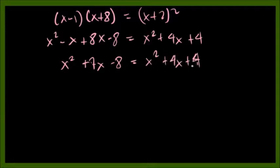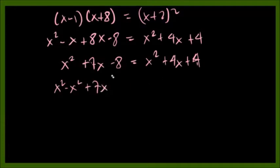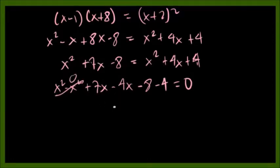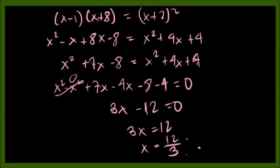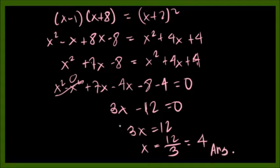We transpose all terms to one side: x squared minus x squared plus 7x minus 4x minus 8 minus 4 equals 0, giving us 3x minus 12 equals 0. So 3x equals 12, and solving for x: x equals 4. That is your answer for example number 1.